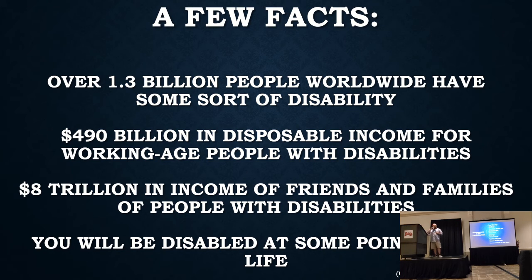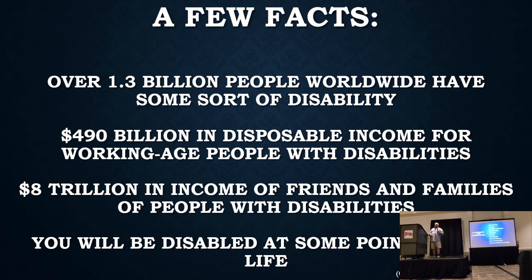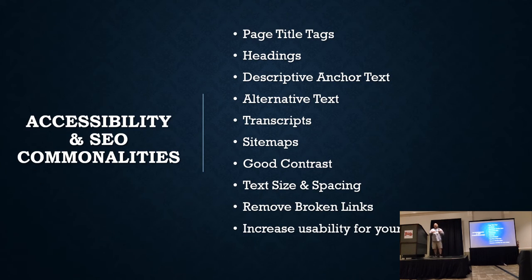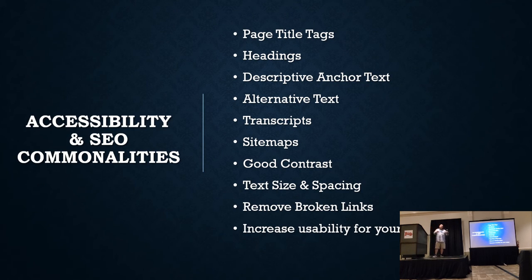We will be disabled at some point. So, things that SEO and accessibility have in common: page title tags, headings, descriptive anchor text, alternative text, transcripts, site maps, good content, text size and spacing, removing broken links, and of course the holy grail — increasing usability for your users. Anybody who knows anything about SEO knows Google is all about usability. Google is going to try to give the user the information that's most relevant to their query.